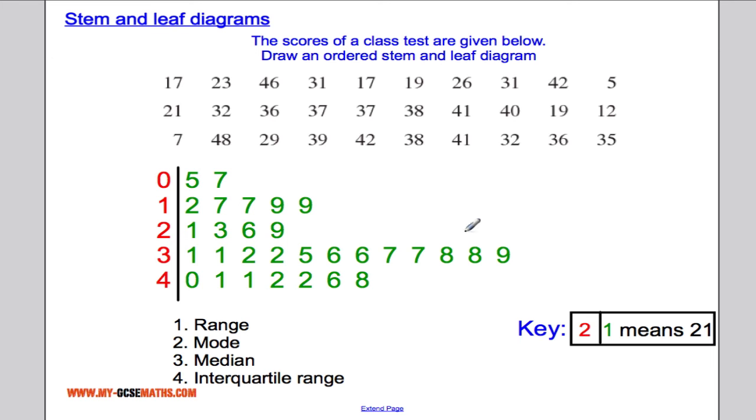So here's our stem and leaf diagram. Everything to the left of this line here is the stem, and over here these green numbers are our leaves.